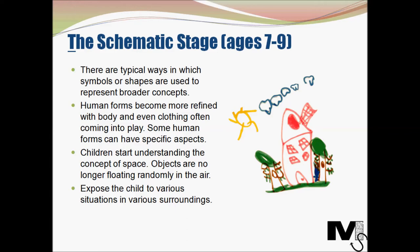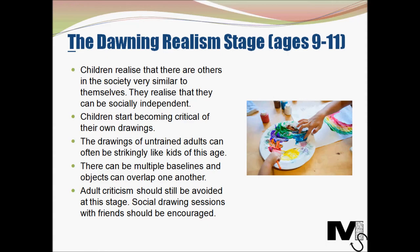The next stage is the dawning realism stage. One of the main characteristics of this stage is a child's realization of being part of a society. They realize that others are similar to themselves and that more can be achieved when people work together in groups, and that they can be socially independent without constant adult supervision. Children also start becoming critical of their own drawings, often intending to draw photorealistic imagery and becoming increasingly critical when they can't replicate the world they see. Interestingly, studies have revealed that drawings of untrained adults can be strikingly similar to kids at this age — many untrained adults essentially remain at this stage in their artistic development.